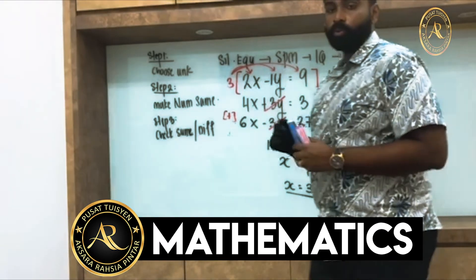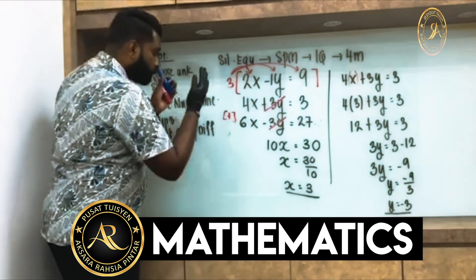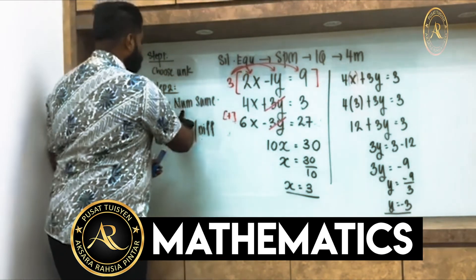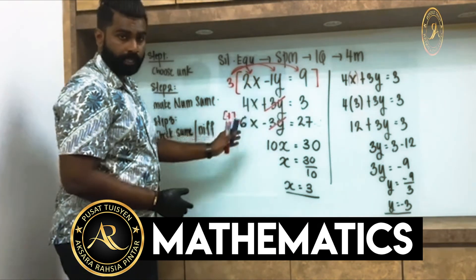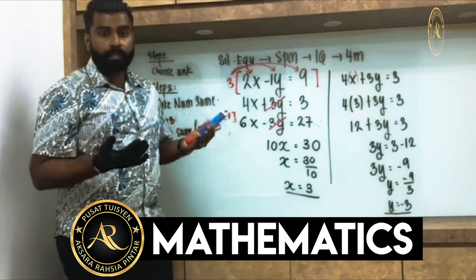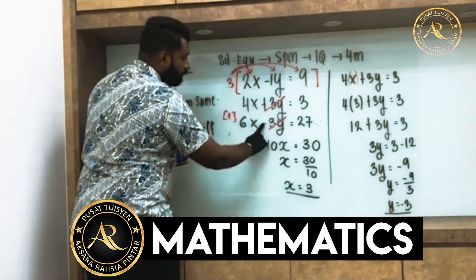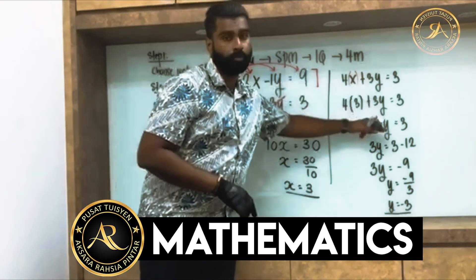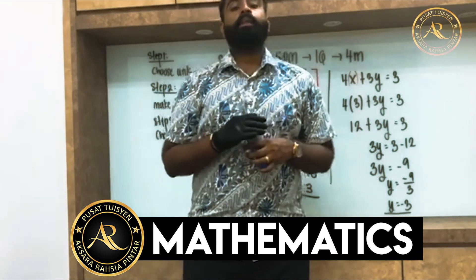To recap, we have three steps. Step one: choose your unknown — x or y. Step two: make the coefficient of that unknown the same in both equations. Step three: check same or different — same means minus, different means plus — eliminate the chosen unknown, solve for one variable, then find the other.